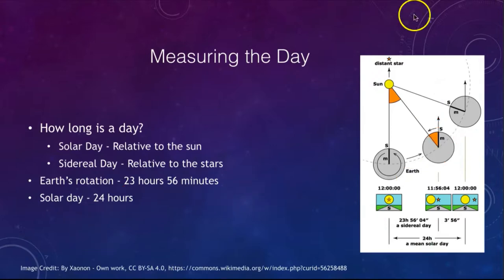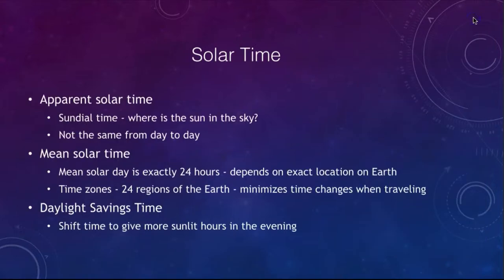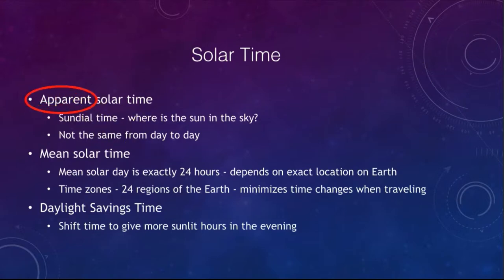There are some concerns with using solar time. One difficulty is that things do not move consistently. Apparent solar time — the time given by a sundial, based on where the Sun is in the sky — is not the same from day to day, and can vary by about half an hour depending on what time of year it is.